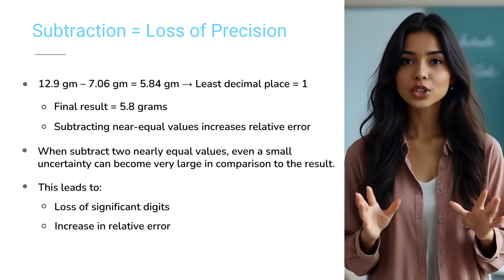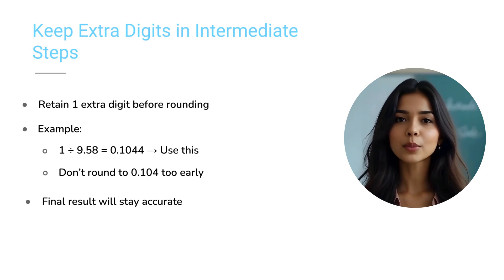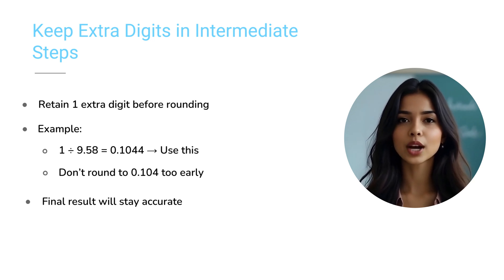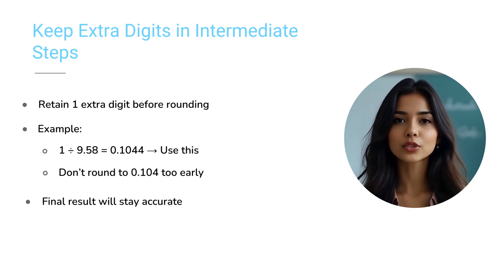Here's a golden rule in multi-step calculations that every science student must know: Always keep one extra digit in intermediate steps. Why? Because rounding too early can introduce major errors in your final answer. Let's see an example.